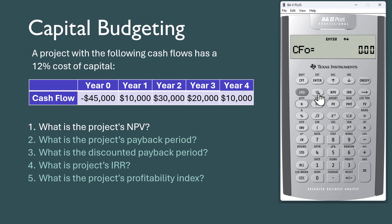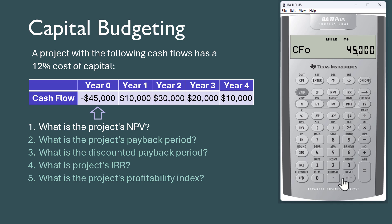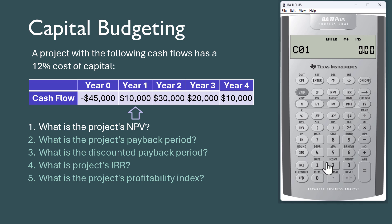Press 2nd Clear Work to clear previously done work. CFO is the initial cash outlay, which is 45,000 here. Press the plus/minus button to make it negative, then press Enter. Then press the down arrow button to scroll down. CO1 is the year 1 cash inflow, which is 10,000 here.